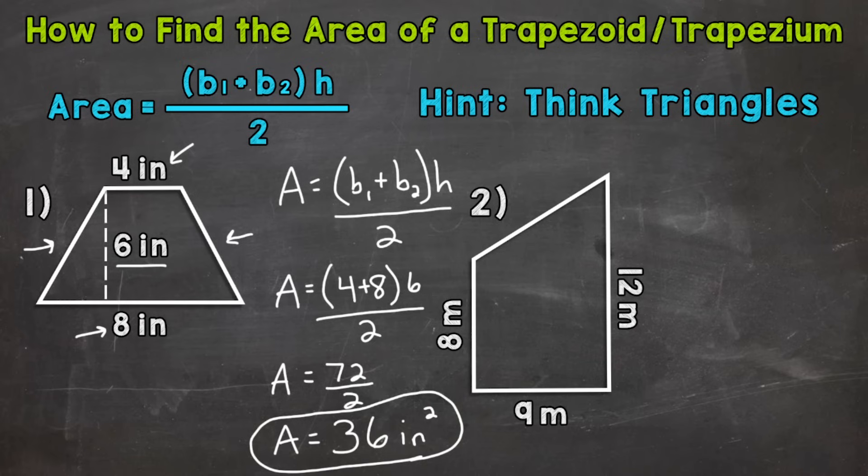So trapezoids can be split into two triangles. For example, number one, if I go from one corner to the other, so top right to bottom left, I get two triangles. I'd get two triangles if I went from the top left to the bottom right as well. So it doesn't really matter which of those you use, it will split or divide that trapezoid into two triangles.